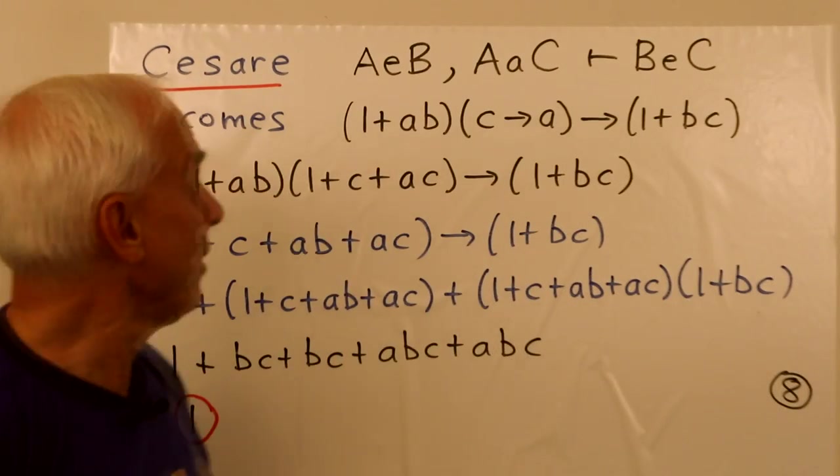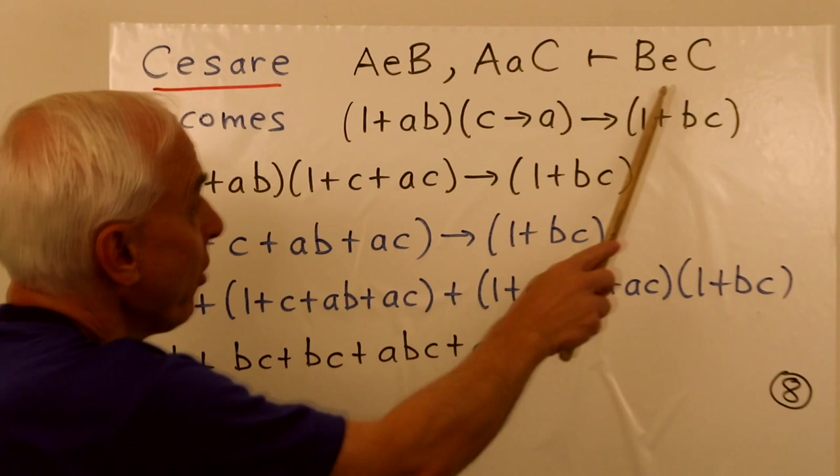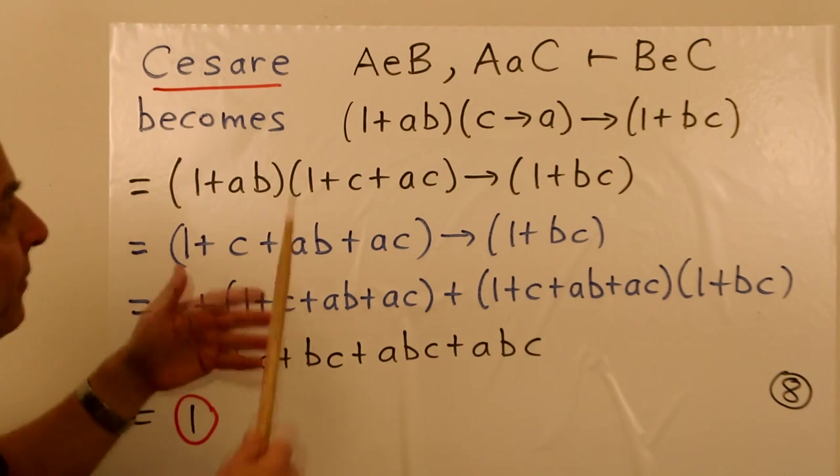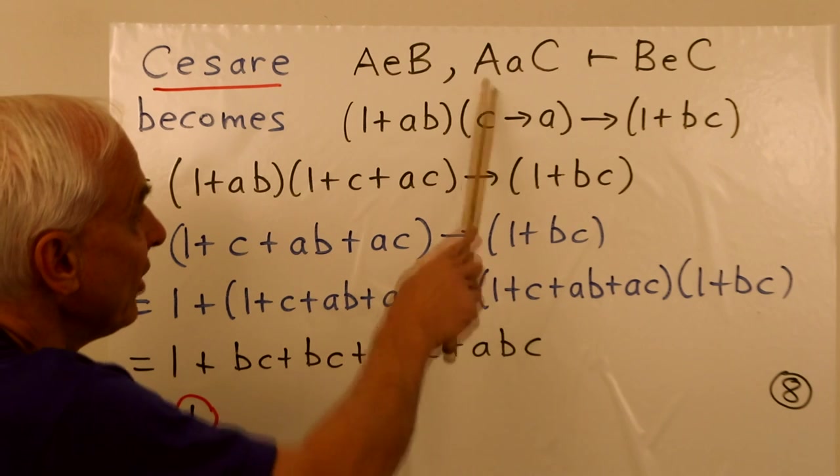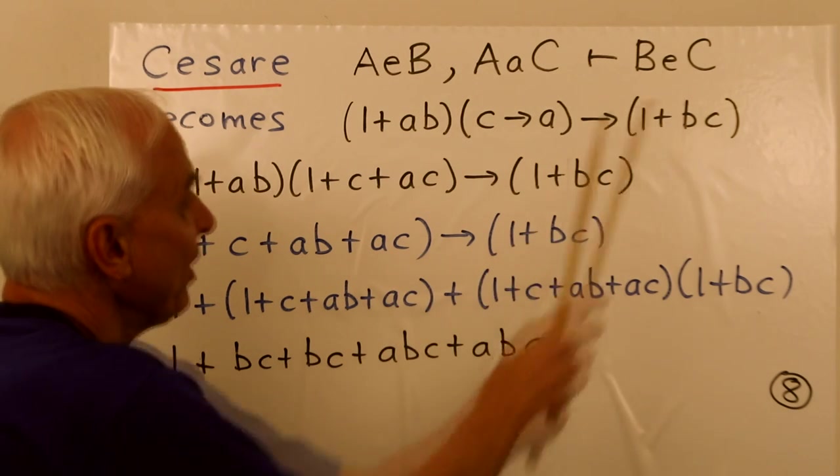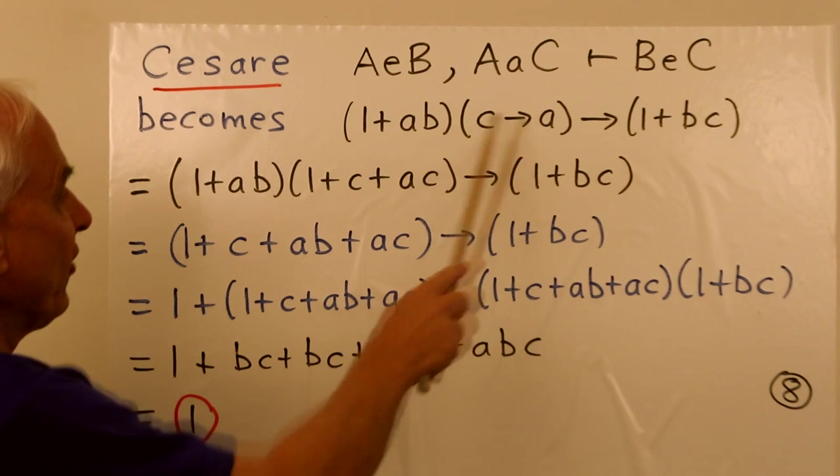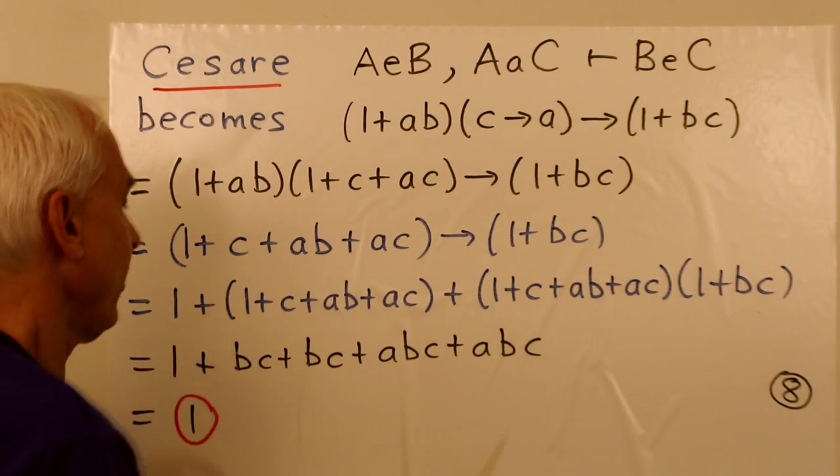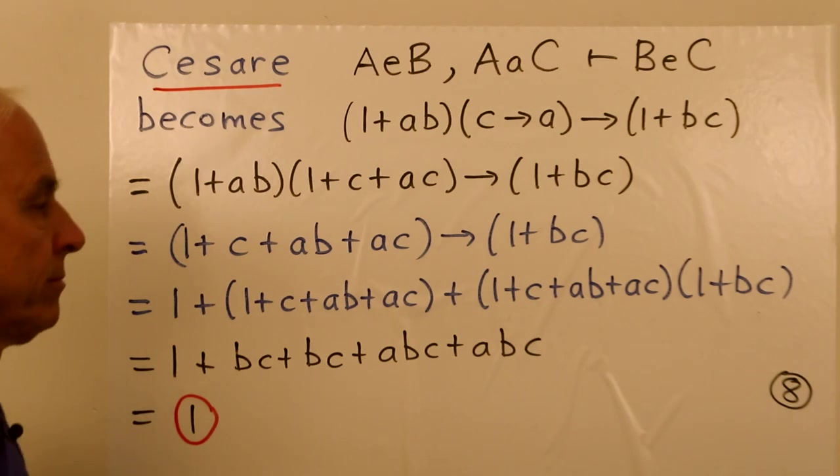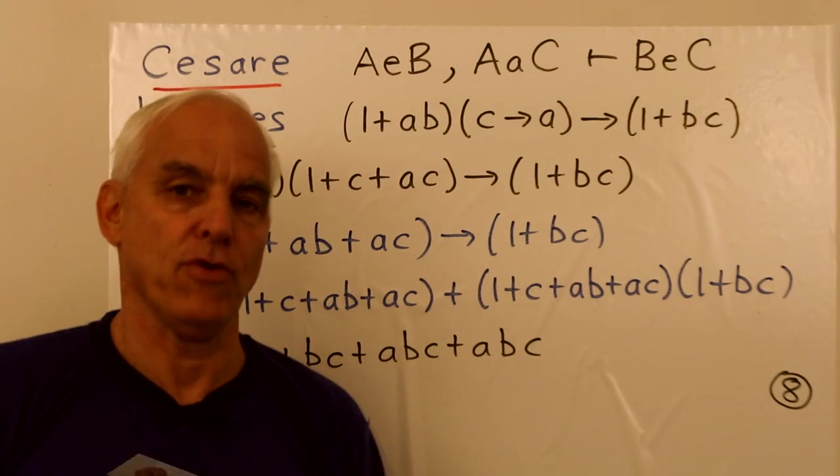Here is Cesare, which has this form. And then similarly, we replace these things. This is one plus AB. This is C implies A. This is one plus BC. We do exactly the same thing as before. We replace this thing with what it's equal to. We expand this out. We replace it like this. We simplify. We get one. Completely cut and dried.